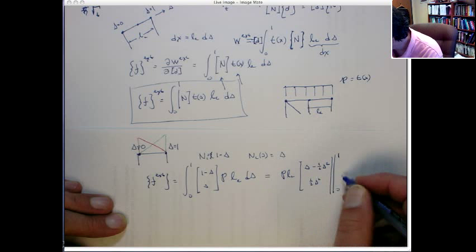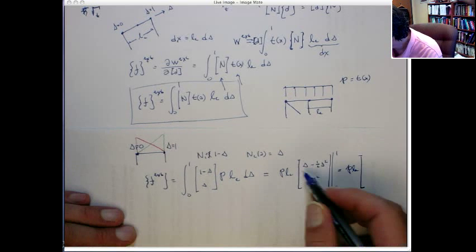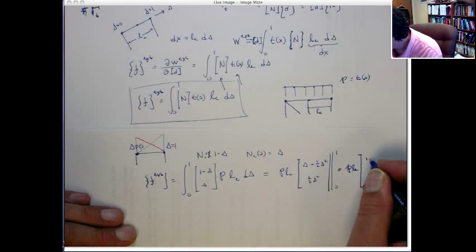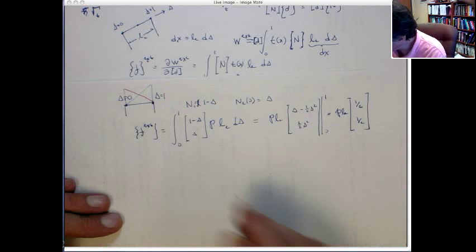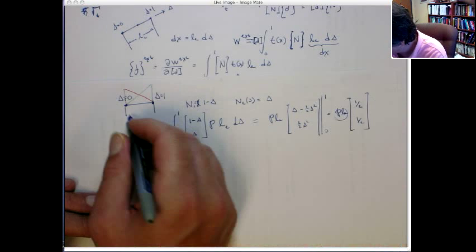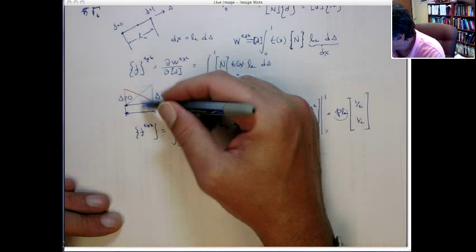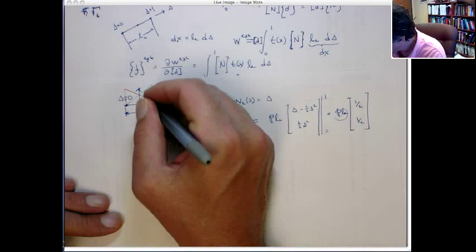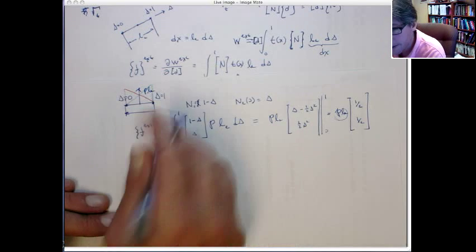When I take the integral, I get [s minus one-half s², one-half s²], evaluated at 0 and 1. The terms at 0 all go to zero, leaving p times le times [1/2, 1/2]. So 1 goes in here giving one-half, and 1 goes in here also giving one-half.